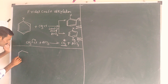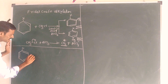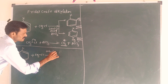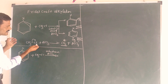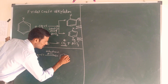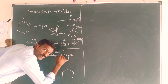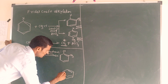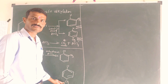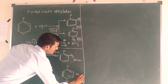For example, chlorobenzene is reacted with methyl chloride in the presence of anhydrous AlCl3. The products are ortho-chlorotoluene and para-chlorotoluene. Ortho-chlorotoluene is the minor product, and para-chlorotoluene is the major product. You can understand it.